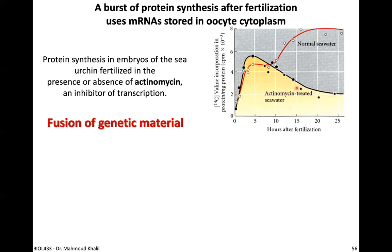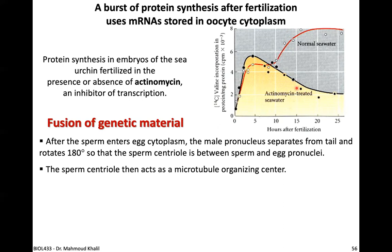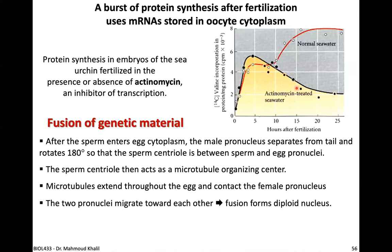Once fertilization occurs and the sperm penetrates and internalizes its head inside the egg cytoplasm, the male pronucleus separates from the tail and rotates 180 degrees so that the sperm centriole is positioned between the sperm and egg pronuclei. The sperm centriole acts as a microtubule organizing center, and microtubules originating from it extend throughout the egg to contact the female pronucleus.